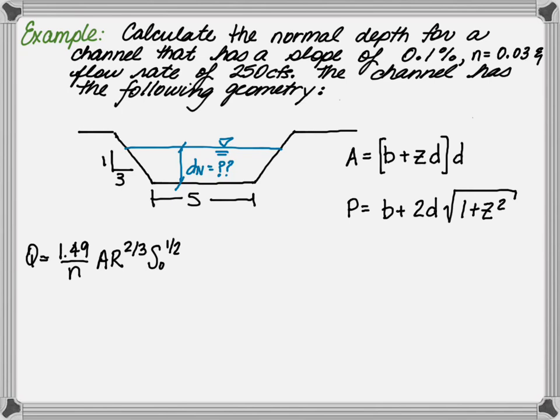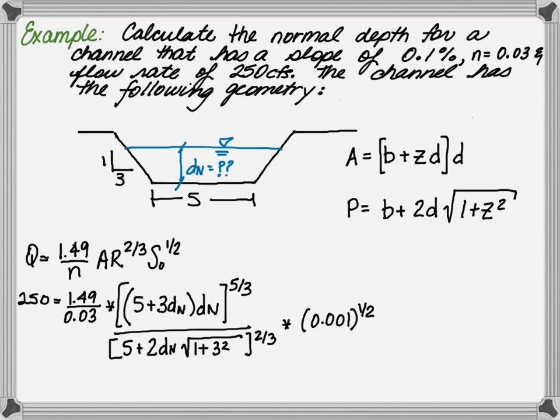By taking these and substituting them directly into the Manning's equation and substituting the terms from the problem statement, we will have 250 cubic feet per second is equal to 1.49 divided by a roughness of 0.03 multiplied by the area, which includes the base width and the side slopes. However, the depth is replaced with the normal depth, which is unknown to the five-thirds power and divided by the wetted perimeter, which includes again the base width of 5 feet and the side slopes of 3. However, the normal depth is not known to the two-thirds power and the slope of 0.001 to the half power.